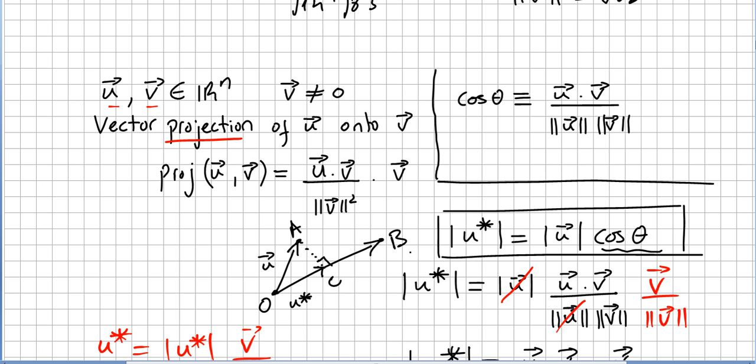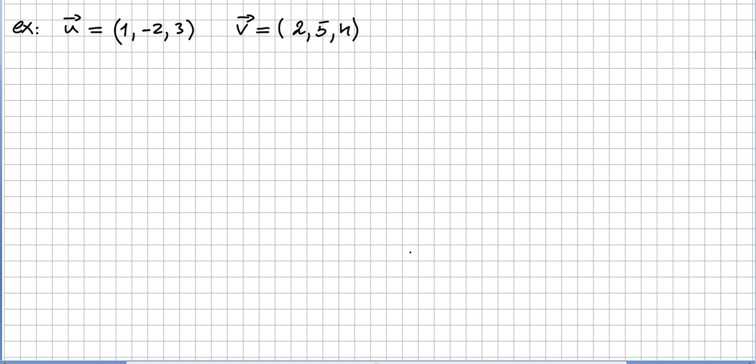In this video we're going to take a very simple example. We pick vector u and vector v, which are both obviously in R³.